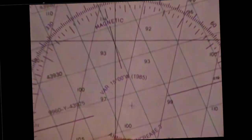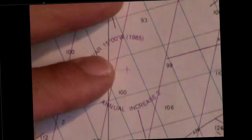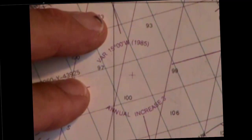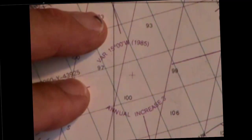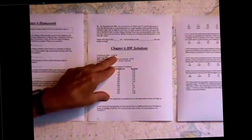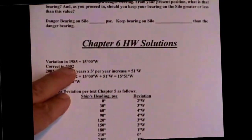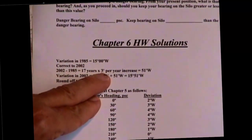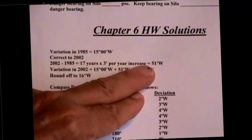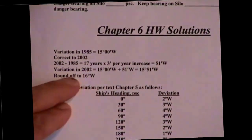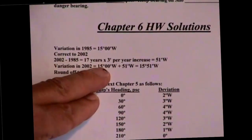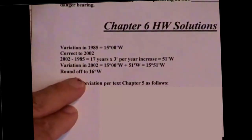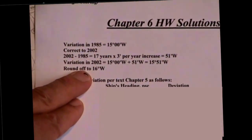The annual increase is three minutes. To bring this up to date to 2002: in the solutions book, variation in 1985 is 15 degrees 00 minutes west. We take 2002 minus 1985 — 17 years times 3 minutes per year increase equals 51 minutes west increase. Variation in 2002 is therefore 15 degrees 00 minutes west plus 51 minutes equals 15 degrees 51 minutes, which we round off to 16 degrees west.